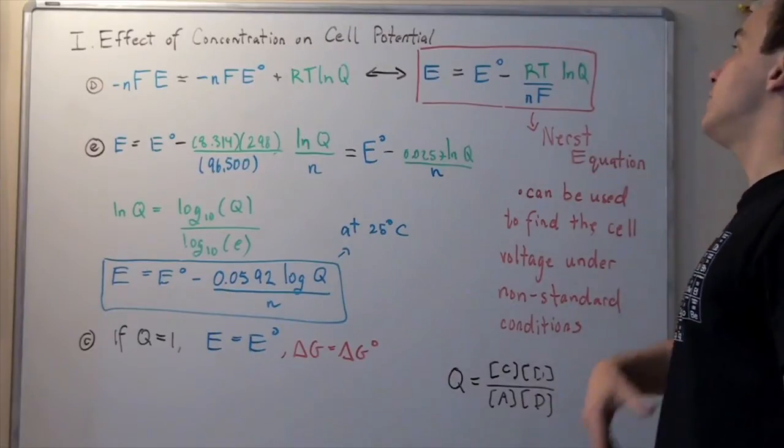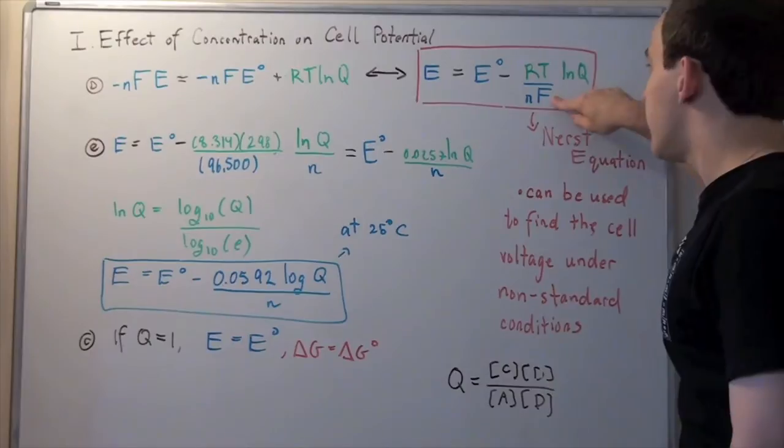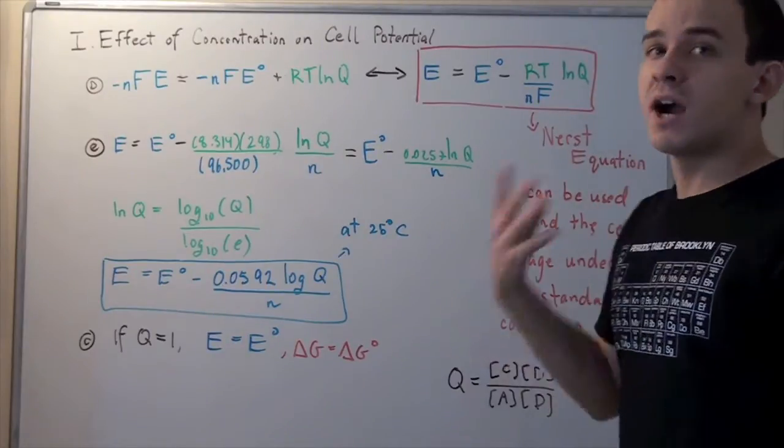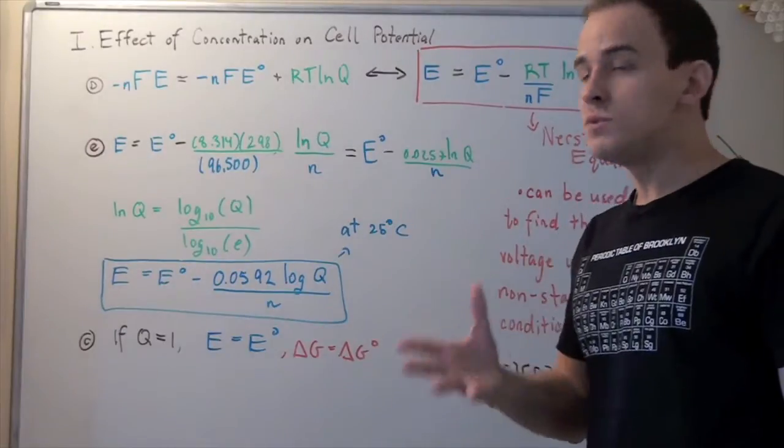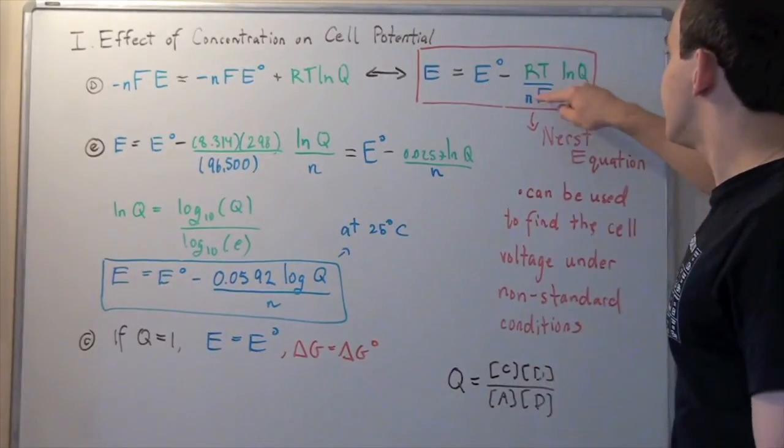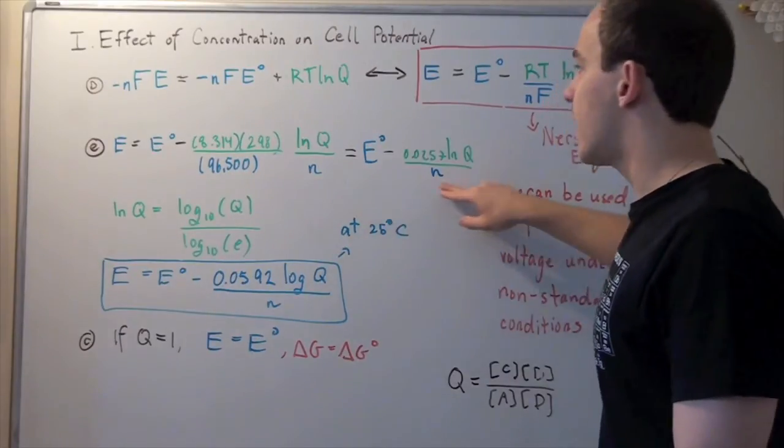Now this can be simplified even further, because notice we have a constant R, a constant F, and if we're given some constant temperature, say 25 degrees Celsius, the most common temperature, room temperature, we can plug these values in and simplify this whole expression to simply this here.